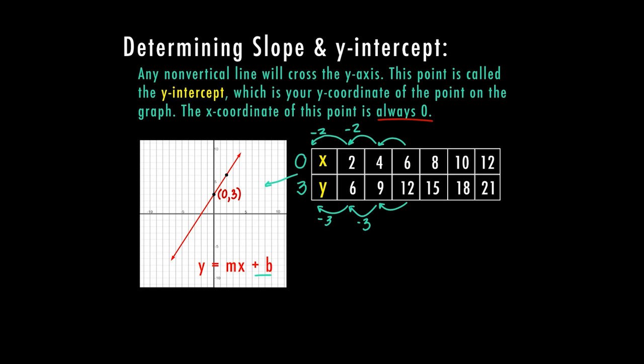So let's fill out what we know so far. We know y equals something times x. I haven't found my slope yet. And then I know my plus b is going to be at 3. And it is positive because it is above the origin. So I'm going to have a plus 3 for my b. That's my y-intercept.